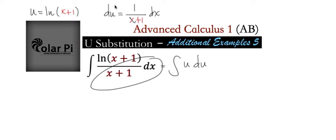and of course the rest of it, the natural log of x plus 1, as we said, is u. Okay, and therefore integral u du, and that's just u squared divided by 2 plus c.